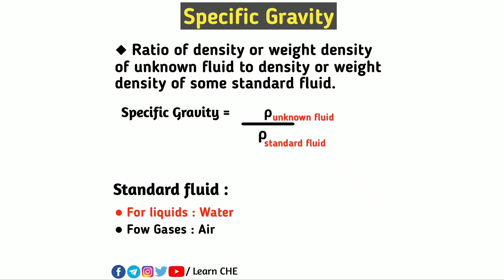Why do we use specific gravity? Suppose we know one fluid whose density we know. So for an unknown fluid, we can find the density if we know the specific gravity.